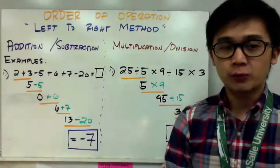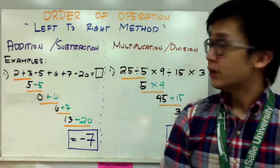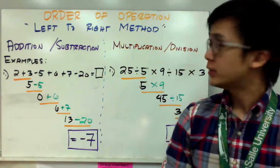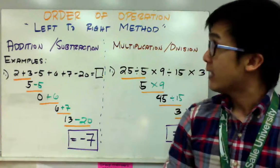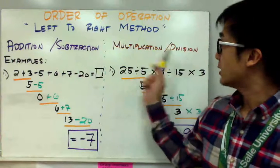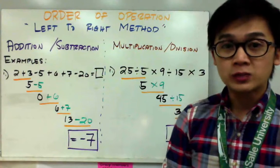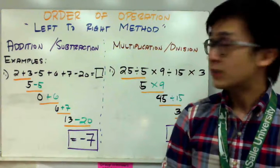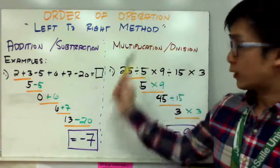Today we're going to be working on order of operations. The first method we're going to show will be the left-to-right method. There are two groups of operations that fall under this method: addition and subtraction, and multiplication and division. If you only have addition and subtraction in your equation, you can perform the left-to-right method, as well as if you only have multiplication and division.